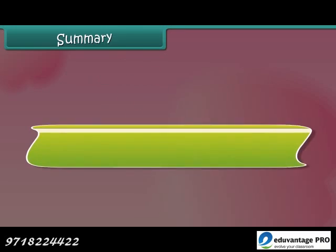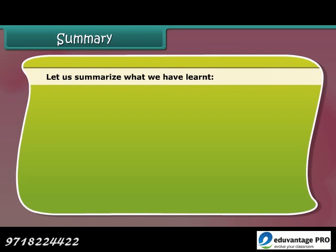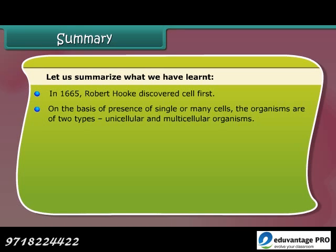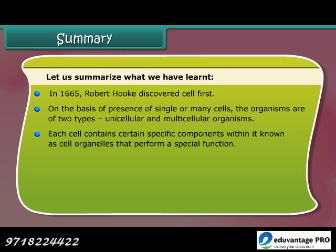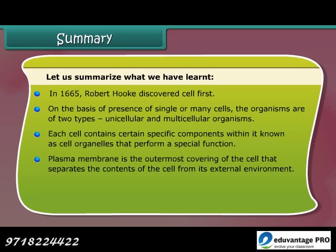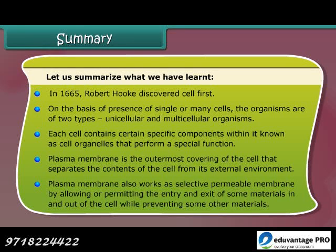Summary: In 1665, Robert Hooke discovered cells first. On the basis of presence of single or many cells, organisms are of two types: unicellular and multicellular. Each cell contains certain specific components known as cell organelles that perform a special function. Plasma membrane is the outermost covering of the cell that separates the contents of the cell from its external environment. It also works as a selectively permeable membrane, allowing or permitting the entry and exit of some materials while preventing others.